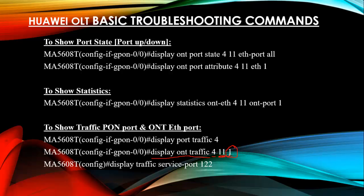If you have a 4-port ONT and want to see ethernet port 2 bandwidth, change the port number to 2. You can also use 'display traffic service-port' for service port traffic. For HVG ONT service traffic, use 'display port hvg ont traffic service-port' — both PON port and ONT ethernet port commands are interface mode commands.